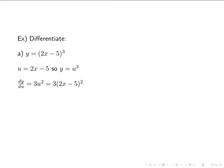We're going to replace back in what u is, so it's 3 times (2x minus 5) squared. Then du/dx — the derivative of u — is 2. So y prime is the product of these two derivatives: 3 times (2x minus 5) squared, that's dy/du, times 2, that's du/dx. Simplified, we get 6 times (2x minus 5) squared. Remember order of operations — I can't distribute that 6 inside the parentheses because of the power, so we just leave it the way that it is.